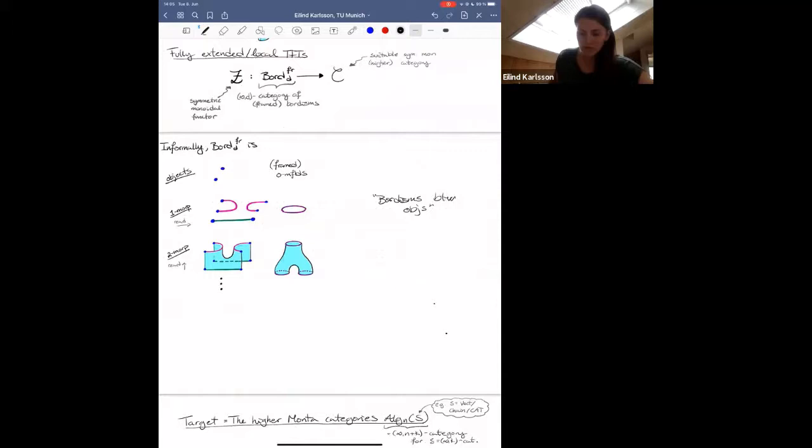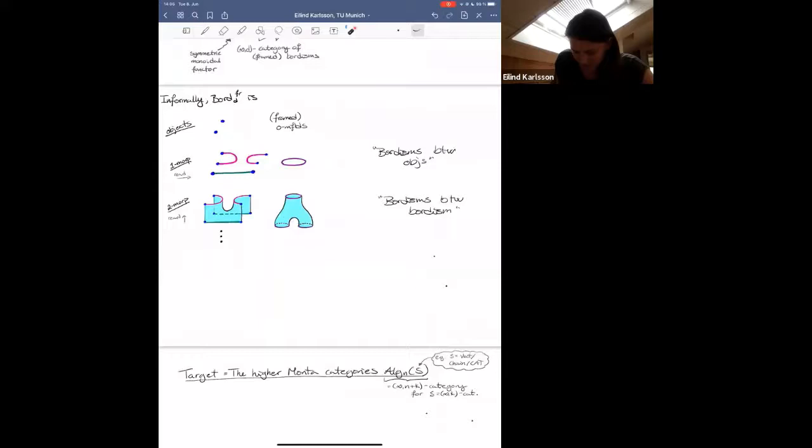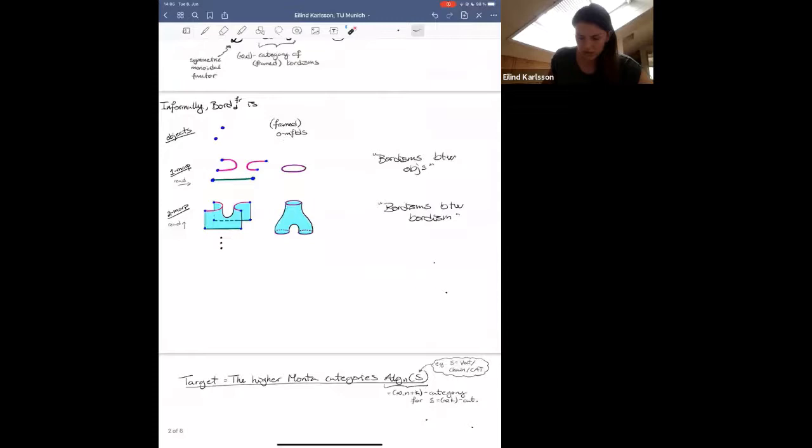I said it would be a higher category. So our two morphisms will be bordisms between bordisms between objects. And the way to read them is to go from the bottom to the top. So here we have two copies of the identity, one morphism on a point. And then you go to this cup and cap after each other, which combined will be a one morphism from two points to two points. And now I have this two morphism between these one morphisms. And then I also have the pair of pants that we had before from two circles to one circle as examples. And then you essentially continue this pattern up to dimension d.